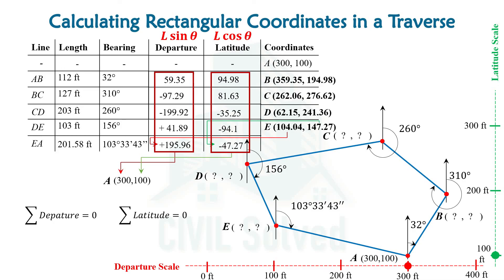Like in this case, the coordinates of point A and the coordinates of point A obtained after moving through the traverse are the same. The second check is that the summation of departure should come out to be zero, and the summation of latitude should also come out to be zero.